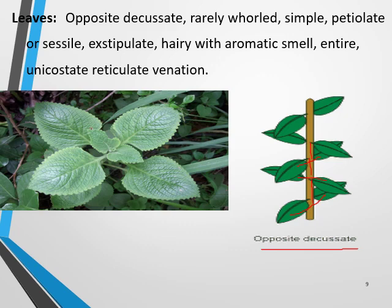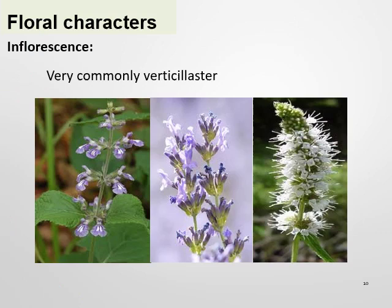This family possesses inflorescence in the form of a verticillaster. In this case, the bracts in the floral region are opposite and each bract has a cluster of sessile flowers in its axil. The two clusters at the node form a whorl-like arrangement called verticillaster, which basically consists of a pair of condensed cymes at each node, and often these are grouped together in a thyrsus form.